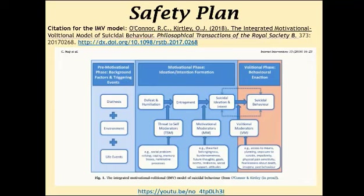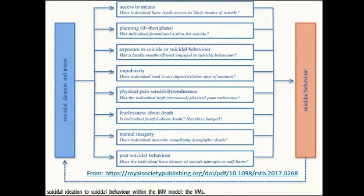This is the first conceptualization of their theory. This revision happened around 2015, and here is a more detailed outline of the IMV model. There are a number of questions that will help provide a clearer picture. Number one: access to means — does the client have access to likely means of suicide? Second: planning — has the individual formulated an if-then plan for suicide? Three: exposure to suicide or suicidal behavior — has a family member or friend engaged in suicidal behavior? Here we also want to look generationally back two or three generations to see if there is a history of suicide within the family — very important information to access.